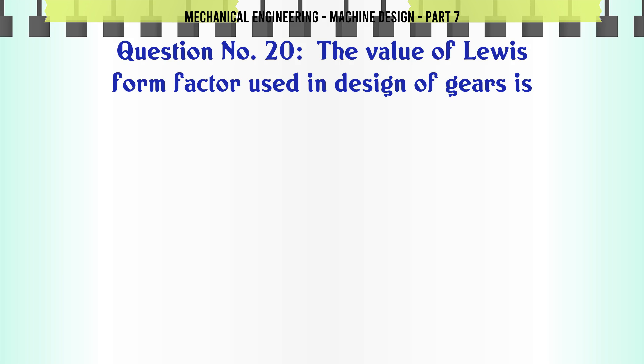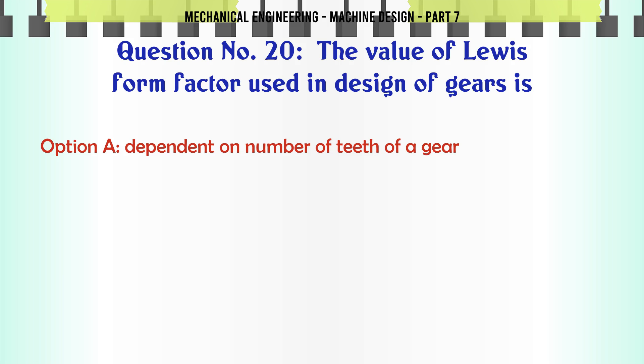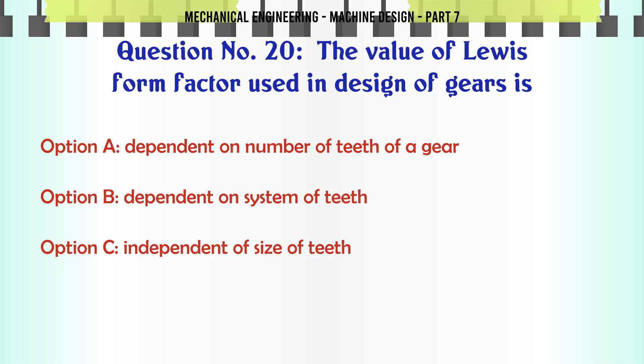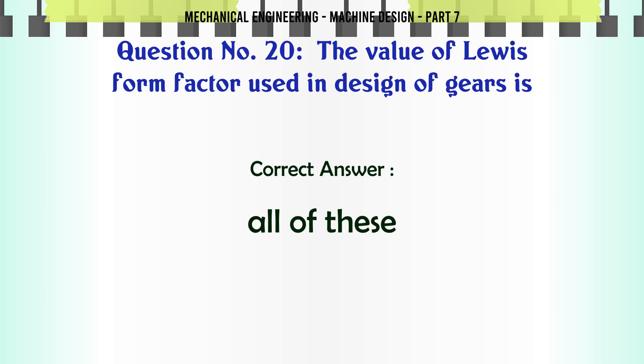The value of Lewis form factor used in design of gears is: a) dependent on number of teeth of a gear, b) dependent on system of teeth, c) independent of size of teeth, d) all of these. The correct answer is: all of these.